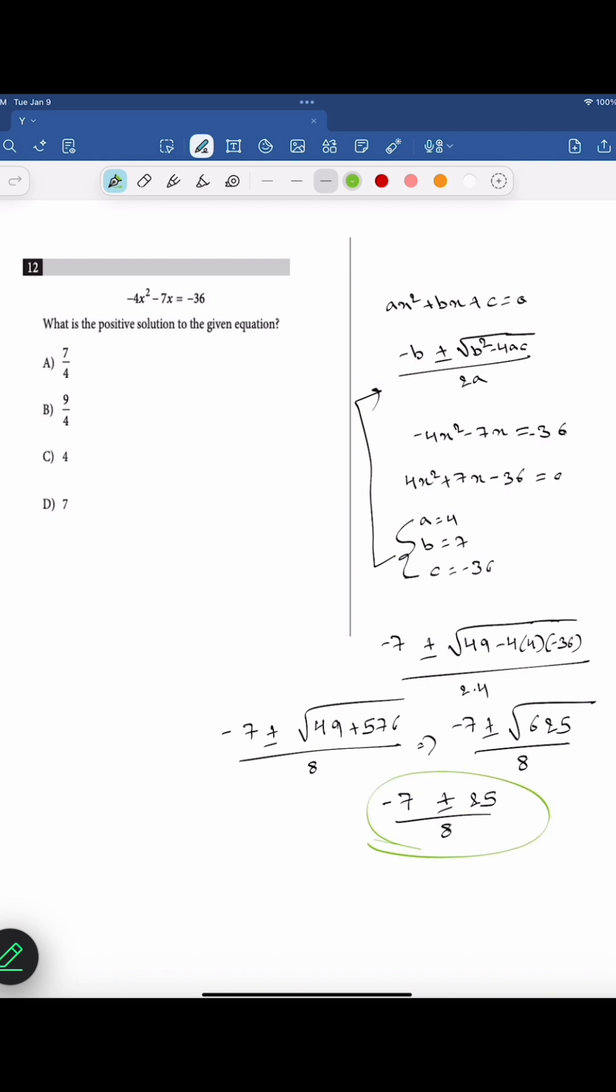From this expression, we can write two roots: minus 7 plus 25 divided by 8, and minus 7 minus 25 divided by 8. This one is 18 divided by 8, which equals 9 over 4. This one is minus 32 divided by 8, which equals minus 4.